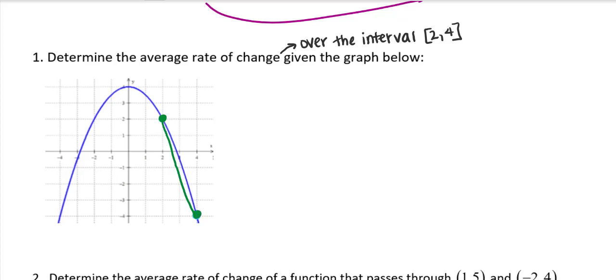So this average rate of change will connect these two points 2, 2 and 4, negative 4. And we can do this by just physically counting our rise over our run. Because again, our slope is a change in output over a change in input. And it doesn't matter which point we start with. So let's say we start with 2, 2. I go down 1, down 2, down 3, down 4, down 5, down 6 units. So that would be negative 6 because I went down. And I'm heading to the right 2. So I would say my slope is negative 3.